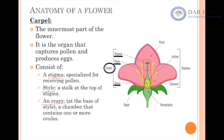The style is a stalk. Below the style is the ovary, which contains the ovules and the eggs inside. At the top of the style there is the stigma, and the stigma is specialized for receiving the pollen.